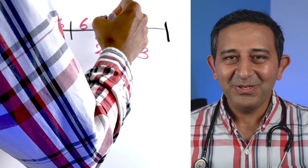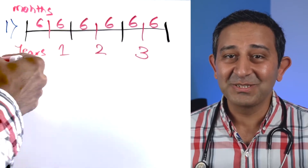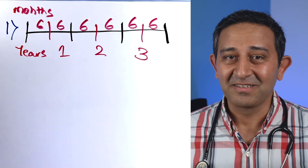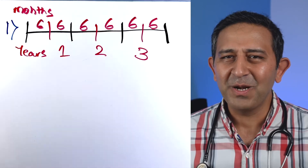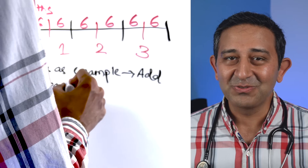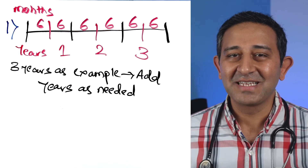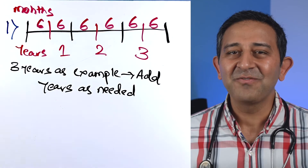Tip number one: divide your total residency time into blocks of six months each. You could do this on a notepad, paper, or in your mind. We will be using this to reference all through this video. I'm going to use a three-year residency as an example. If your residency is four years or longer, like in Canada and other countries, you could still do the same — just keep adding those blocks of six months each.